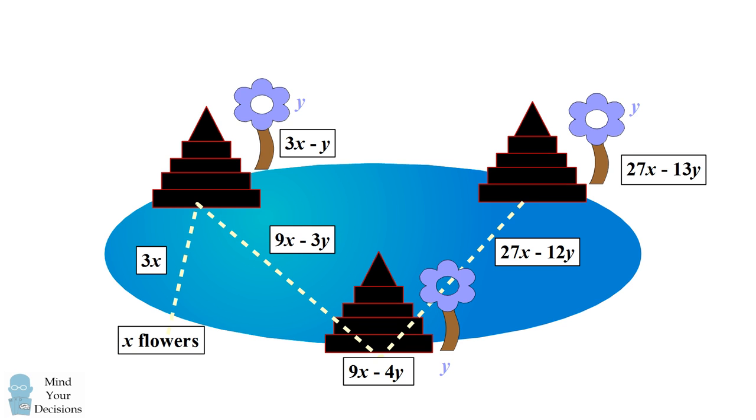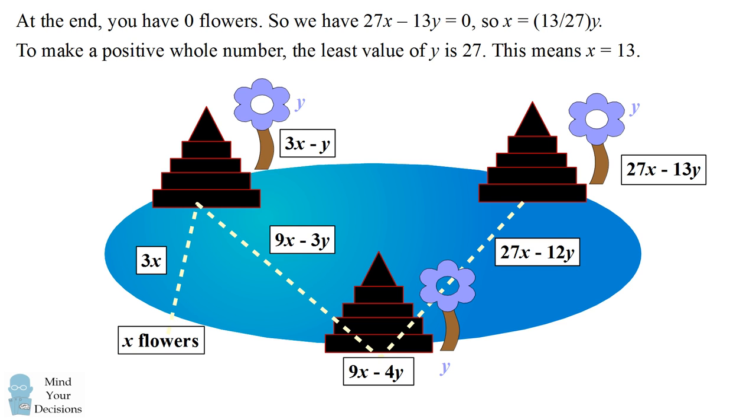Of course, at the very end, you have no flowers. This leads to the equation 27x minus 13y equals 0. So x equals 13 divided by 27 times y. We need the number of flowers you place to be a whole number. The least value for y would be 27, which means that you started with 13 flowers.